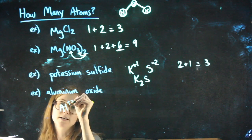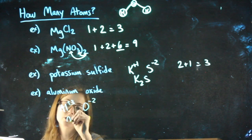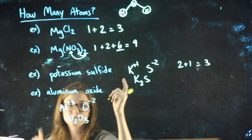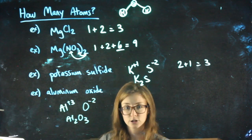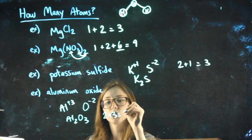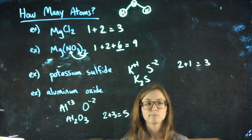Aluminum oxide. Aluminum is a plus three, oxygen is a minus two. So aluminum oxide, if I crisscross, is Al2O3. Two aluminums, three oxygens, five atoms total.